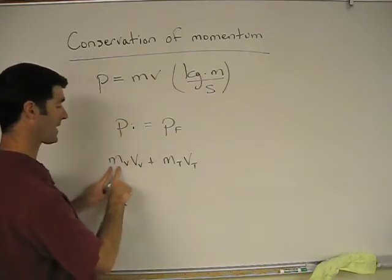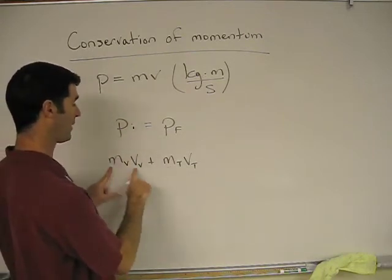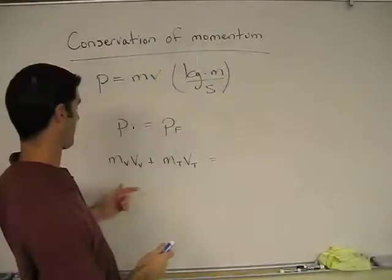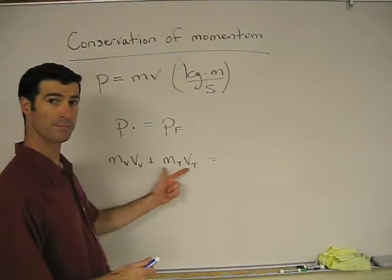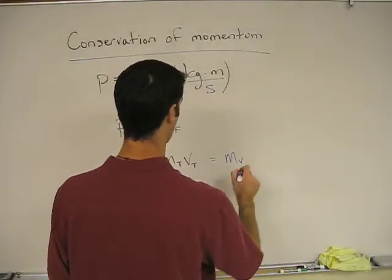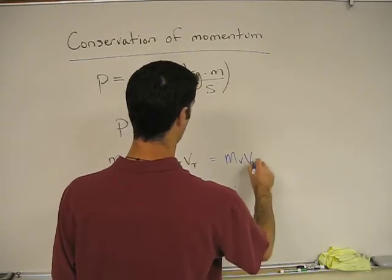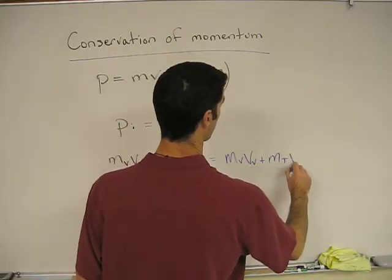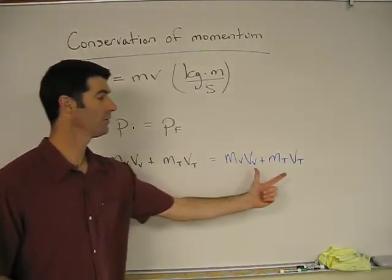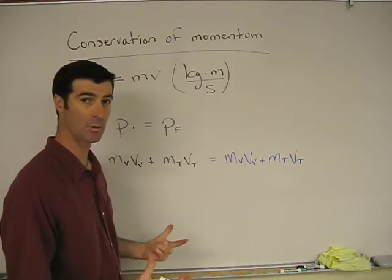Now remember, the mass of the volleyball is much greater than the mass of the tennis ball, so this is big, this is relatively small as momentum. So before, and then after, we have the mass of the velocity of the volleyball, plus the mass of the tennis ball, and the velocity of the tennis ball. So these two sides of the equation have to equal each other.